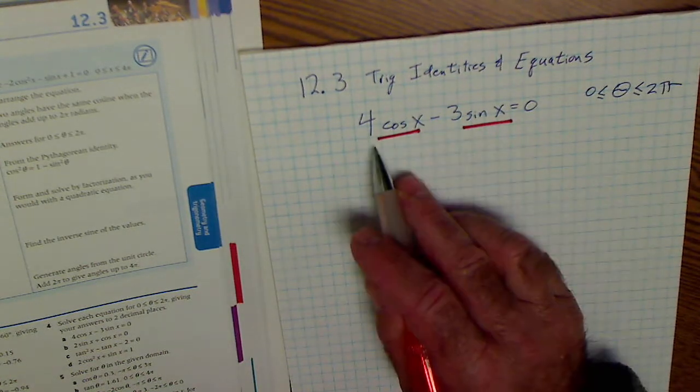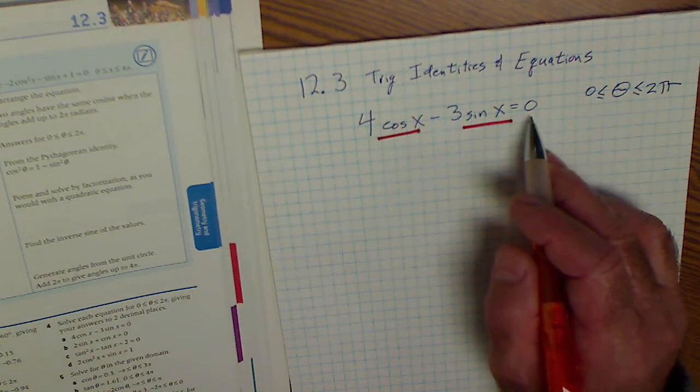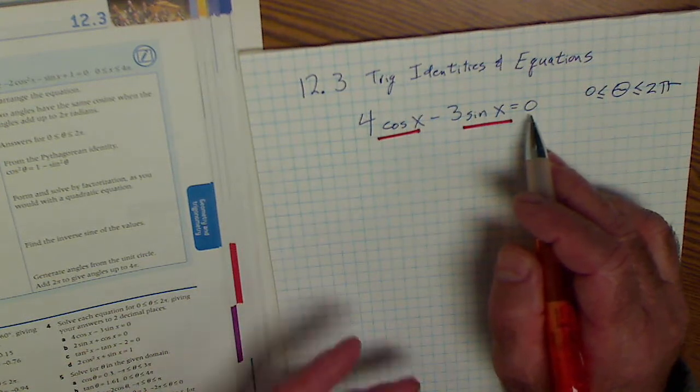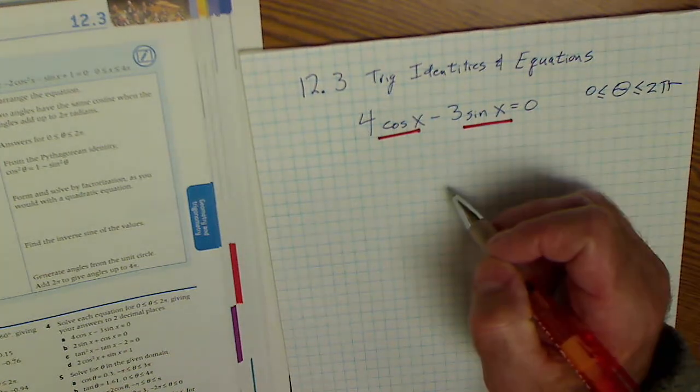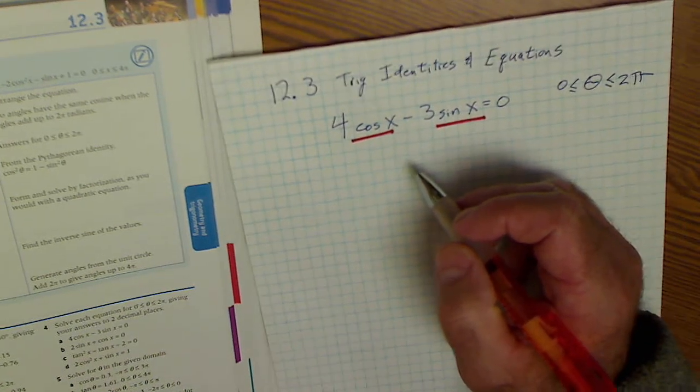Multiple arguments is like having 4x minus 3y equals 0. Two variables in one equation I can't solve. I need another equation for substitution. So I have to know my trig identities.